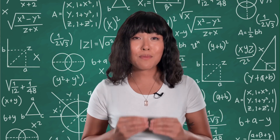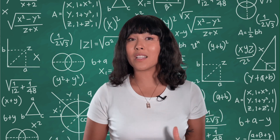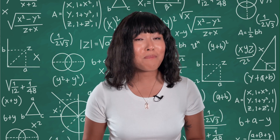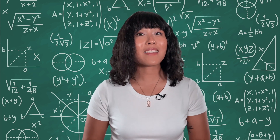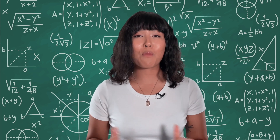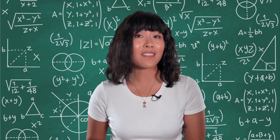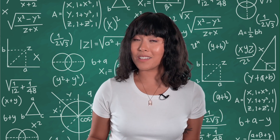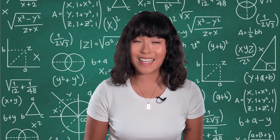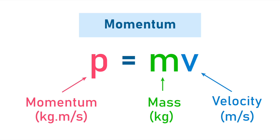As you've already seen in this course, sometimes studying the physical world involves doing a little math, and momentum is no exception. Luckily, the math here is very straightforward. To calculate momentum, we just multiply the two things that cause it — do you remember what they are? Mass and velocity. So this is our equation for momentum: P equals MV. But why a P for momentum? Well, what letter would you have picked? M? Too bad — that one's already taken by mass. So we'll have to live with momentum being represented by the letter P.